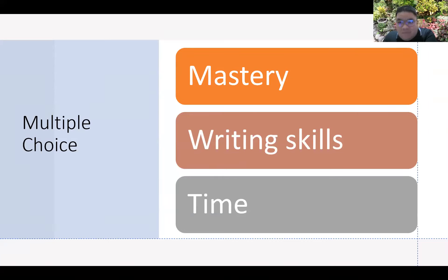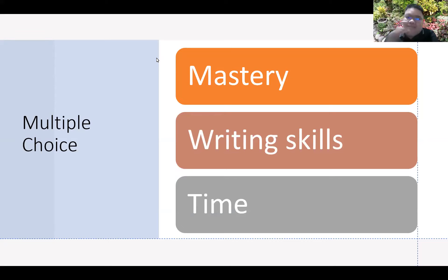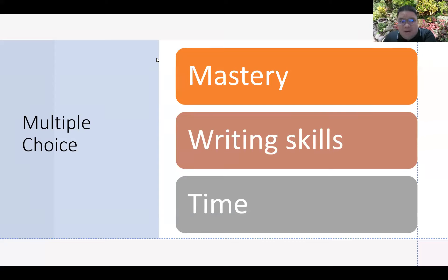One: your mastery of the topic. Two: your writing skills. And third: the time element. For mastery — for example, I major in science. Don't expect me to make a good assessment in other subjects because my mastery is in science. But if you give me time to learn other subjects, I might be able to do that.